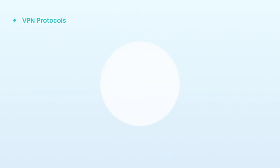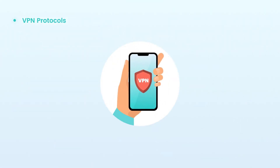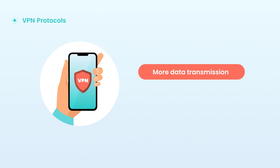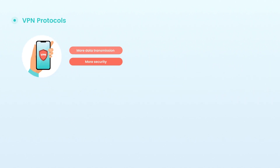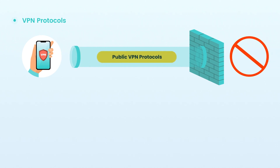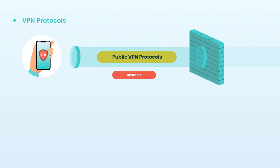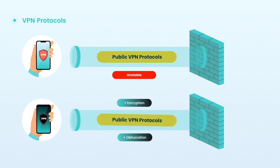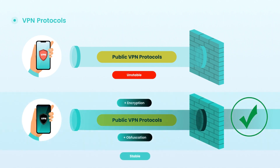VPN protocols are mostly open protocols, offering enhanced security and encryption compared to regular network protocols. But public VPN protocols are easily blocked due to their recognizable features. Most VPN products use public VPN protocols, while some incorporate encryption and obfuscation layers into ordinary protocols to create private VPN protocols that are less likely to be blocked.